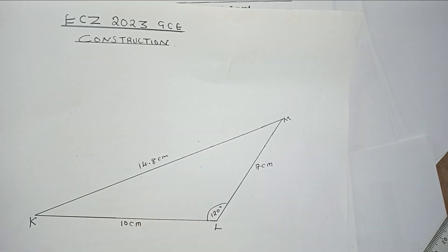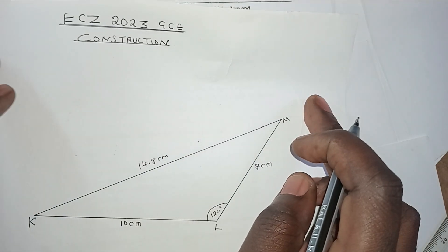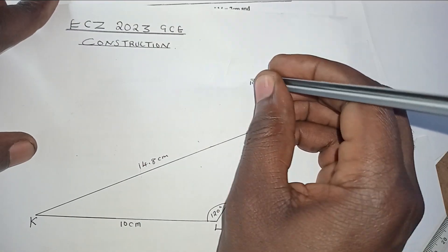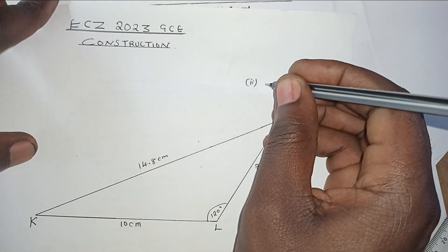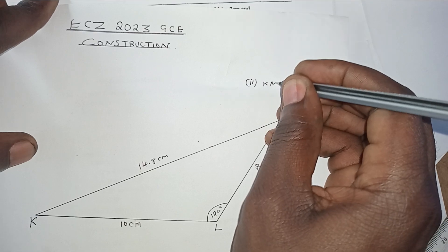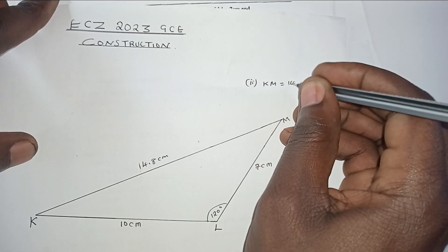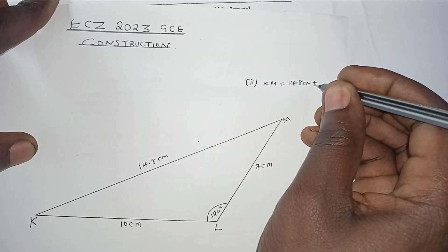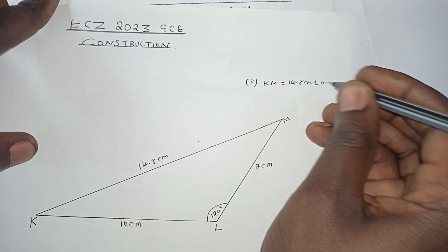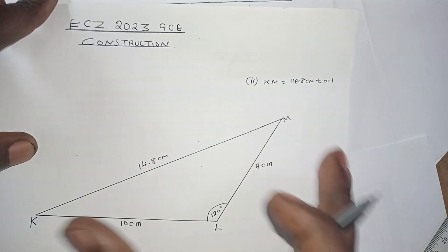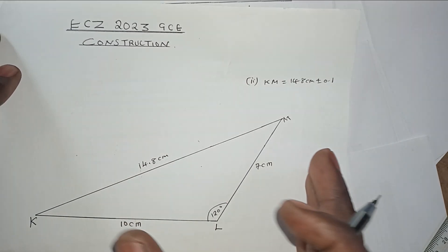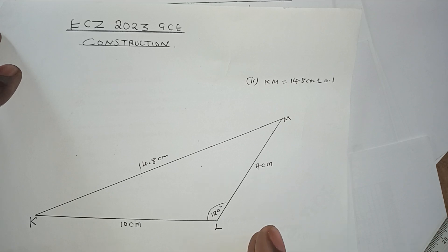In your answer, indicate this is the solution to part 2: the distance KM is 14.8 centimeters. This can be plus or minus 0.1, as there could be some variations in measurement. So this is just an approximation of the actual distance.